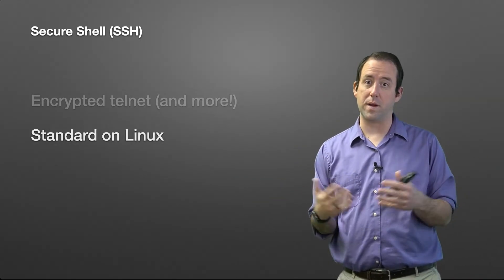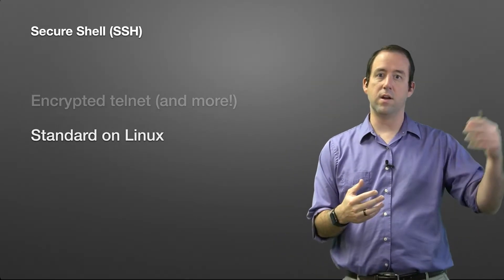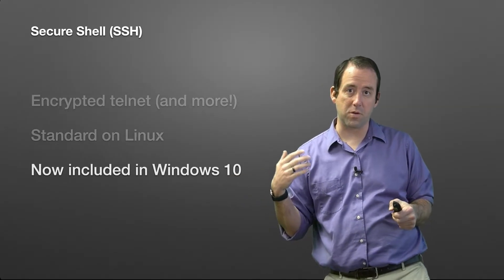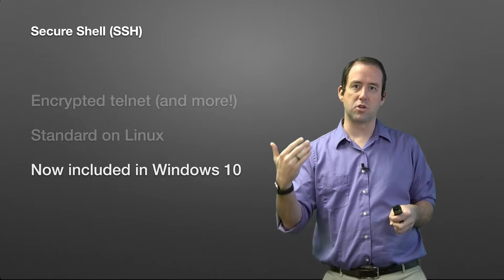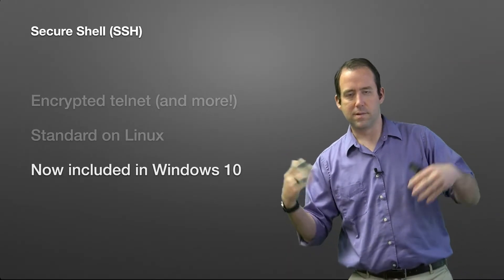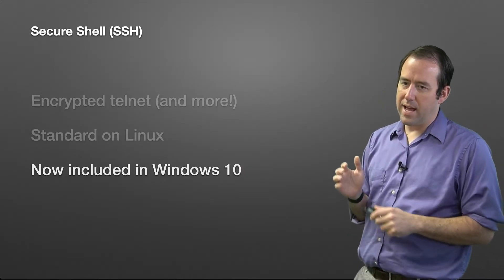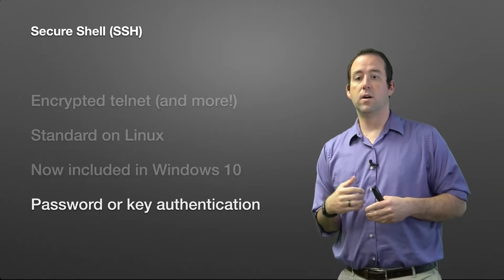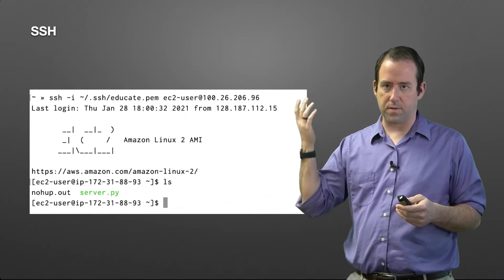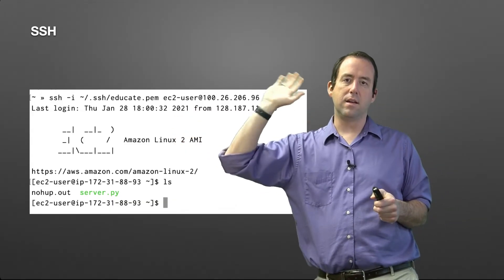OpenSSH is the most common software implementation of the SSH protocol. It's installed and enabled by default on every Linux server and available on every Linux client. You can also now install it on Windows 10 — with modern updates, Windows has provided an OpenSSH implementation. SSH supports both password authentication and key-based authentication, with key authentication being the default on AWS. When you SSH into a server, you'll typically see a banner and your prompt will change, which is handy for knowing whether you're on your local or remote machine.